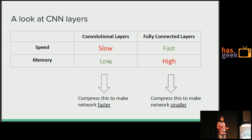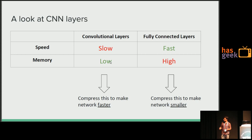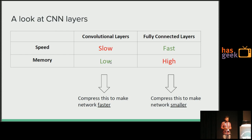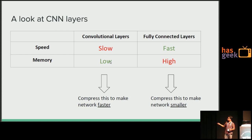Let's look at what kinds of layers are present in a CNN. We have convolutional layers and fully connected layers. These two are almost opposites of each other. Convolutional layers are very slow to infer but have a very low number of parameters, so they take less memory. Fully connected layers, on the other hand, are very fast to perform inference but take up really large amounts of memory. If you want to make a network faster, compress convolutional layers; if you want to make a network smaller, compress fully connected layers.